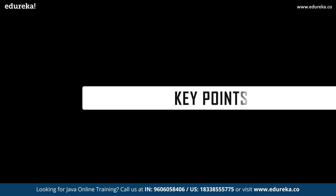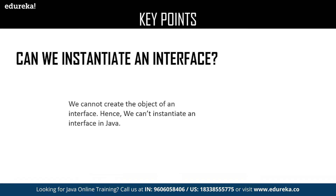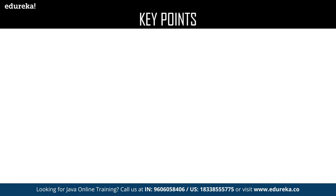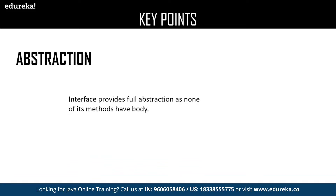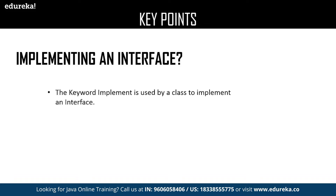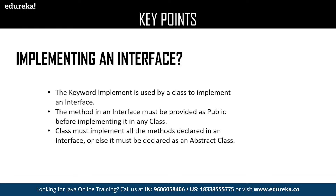Now let us discuss key points about Java interfaces. First: can we instantiate an interface? We cannot create an object of an interface, hence we cannot provide instances. Next is abstraction — the major advantage of interface is abstraction because none of the methods declared in an interface have a body. The keyword implements is used in a class to implement the methods of an interface. Methods in an interface must have public access modifier by default, and a class must implement all methods declared in an interface or else be declared as abstract.